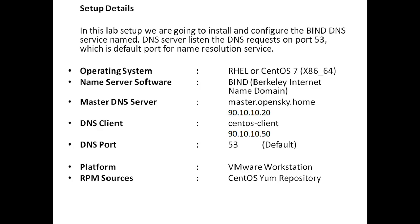For the DNS client I am going to use a CentOS client with IP address 90.10.10.50, and I will configure this CentOS client IP in the DNS configuration to check whether it is getting resolved by the DNS server or not. The default DNS port 53 will be used, and this whole setup is hosted on VMware Workstation. For RPM sources we are using the CentOS YUM repository. Please take a screenshot or keep a note of this whole setup, as missing these details may cause confusion in later steps. We will now jump to Part 1.